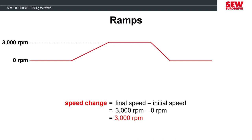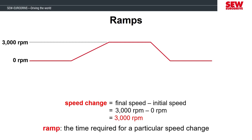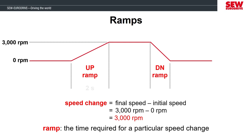The next definition we have is the ramp. This is the amount of time it takes to complete the speed change. With the MobiDrive, you can customize different ramp times for the acceleration and deceleration. For this example, we can say the desired up ramp should complete in two seconds and the down ramp should complete in one second. These times may be the desired ramp times for the cycle time of the machine, but sometimes the ramps have to be longer than desired because of the mechanics of the application.